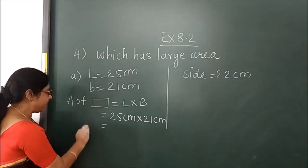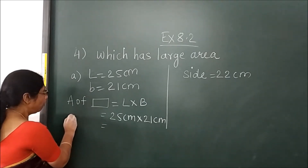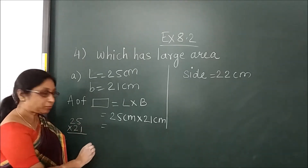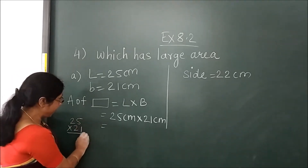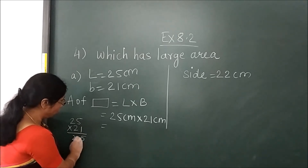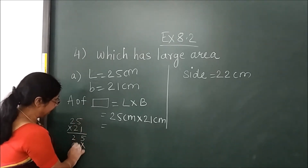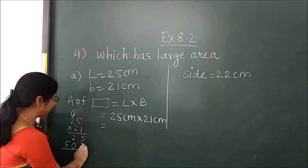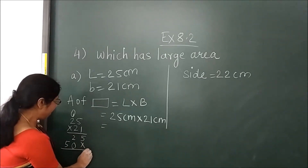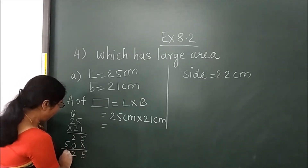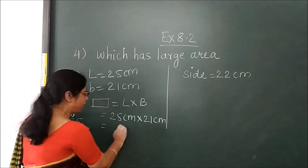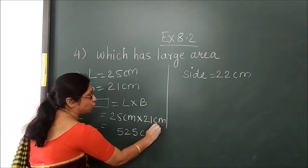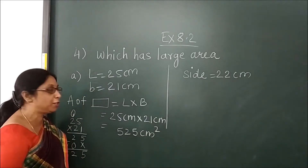What is the formula for area of rectangle? Length into breadth. So you will multiply now: 25 centimeter multiplied by 21 centimeter. Carry out simple multiplication. 1 times 5 is 5, 1 times 2 is 2, then 2 times 5 is 10, 2 times 2 is 4, plus 1 — giving 525. So the area is 525 centimeter squared.